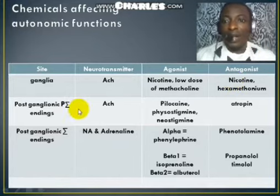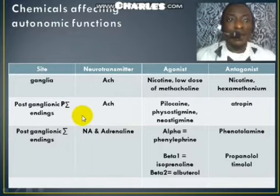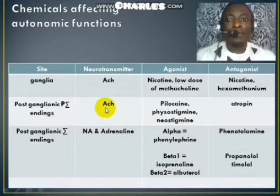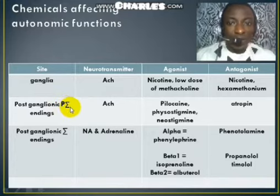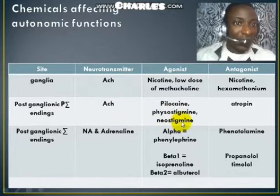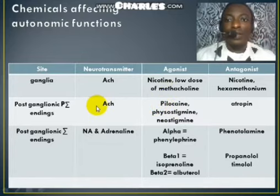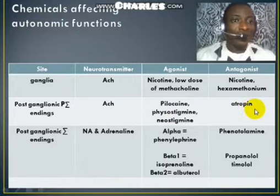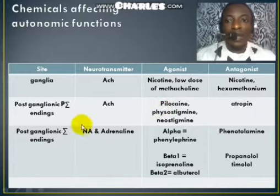For the postganglionic parasympathetic endings, the neurotransmitter used is acetylcholine — this is the postganglionic cholinergic or muscarinic receptor. Pilocarpine, physostigmine, and neostigmine activate the muscarinic receptors of the postganglionic parasympathetic neuron, whereas atropine is a drug that inhibits the muscarinic receptor of the postganglionic parasympathetic neuron.